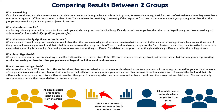Comparing results between two groups: if you've collected data on an exclusive demographic variable with two options — for example, whether or not they are a teacher or agency staff — and they cannot select both options, then you have the possibility of assessing if responses from one independent group are different than responses from another group for a particular area of practice.